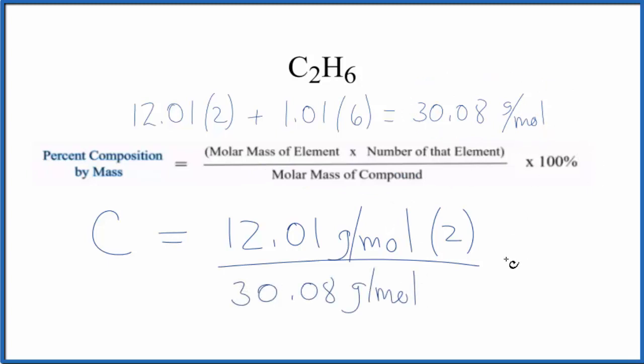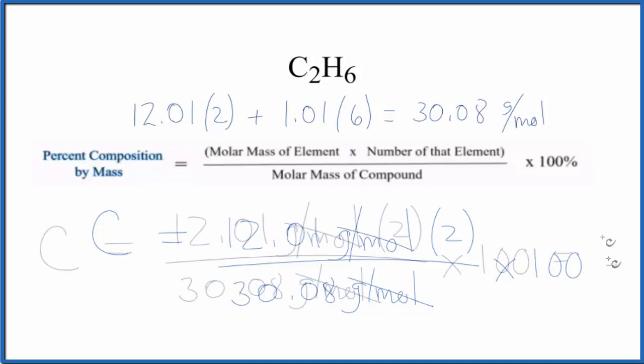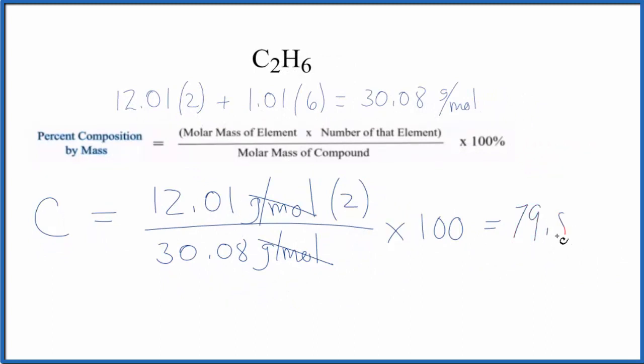We multiply it by 100 to get a percent, and you'll notice that grams per mole is on the top and the bottom, so it cancels out. We end up with 79.85%. So if we had a sample of C2H6, 79.85% of the mass would be carbon.